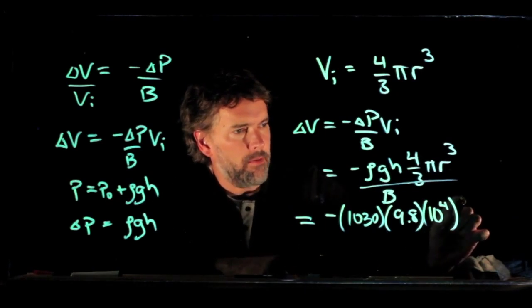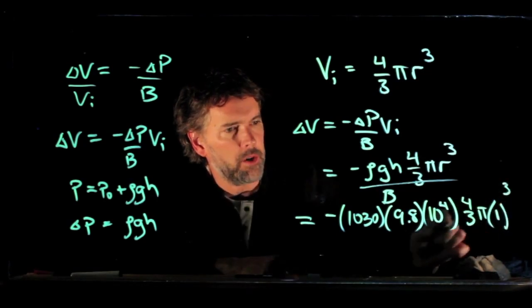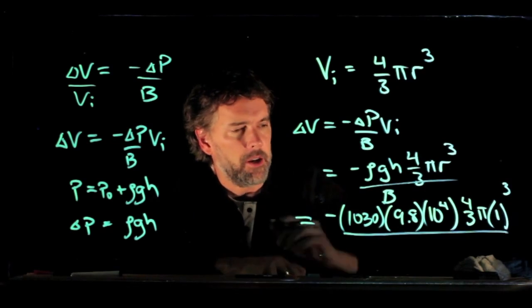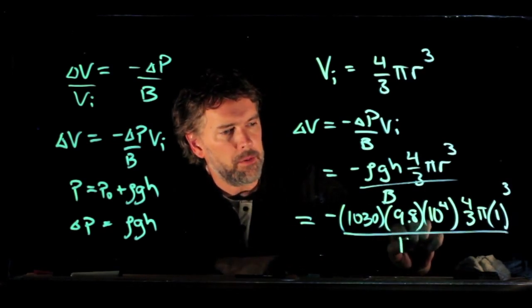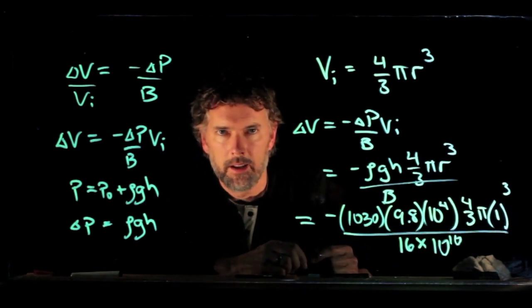And now we have 4/3, we have a π, radius we said was one, we're going to cube one which is still just one, and then we're going to divide by B which we said was 16 times 10 to the 10th. All right, let's run those numbers in our calculator and see what we get.